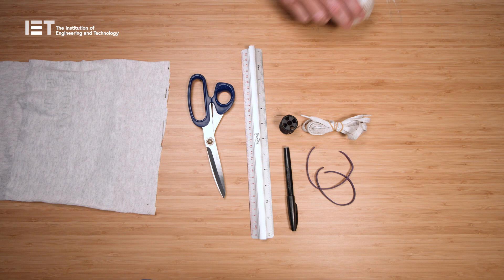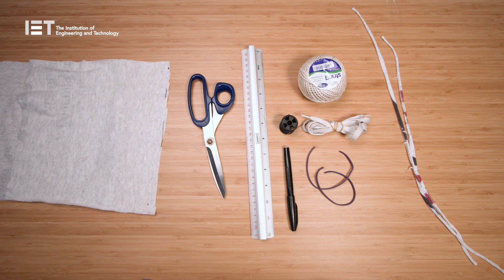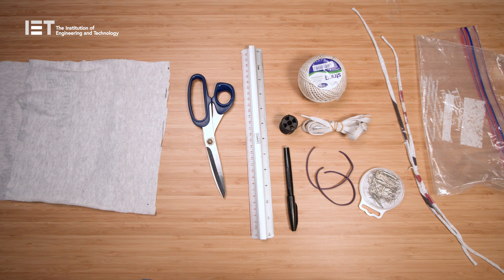If you haven't got elastic you can use shoelaces, string, or even cut out 20cm of fabric from an old t-shirt. You'll also need a box of pins and a plastic bag to keep the mask in between use.